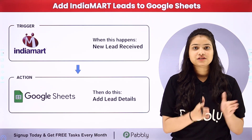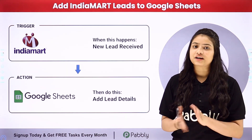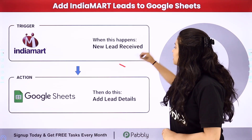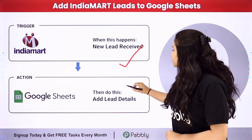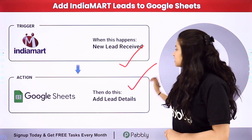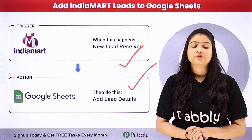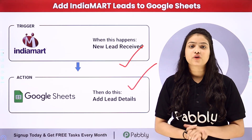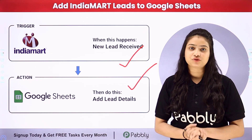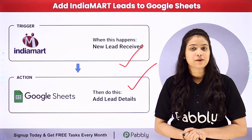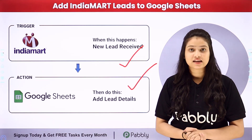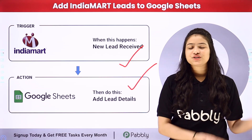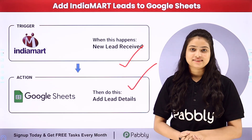Pabbly Connect works on two principles: Trigger and Action. In the Trigger we are going to take IndiaMart, and in Action we are going to take Google Sheets. We will connect both of them to automate this entire process without any coding or programming skills. To learn this entire automation step by step, let me take you to my screen.